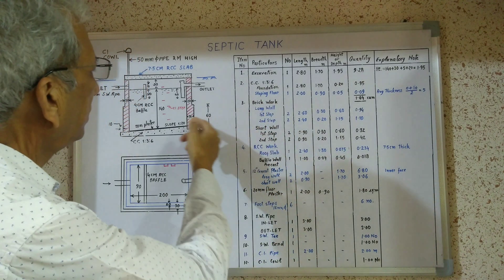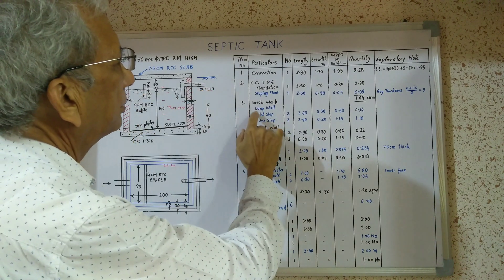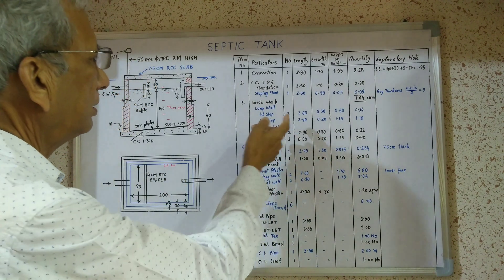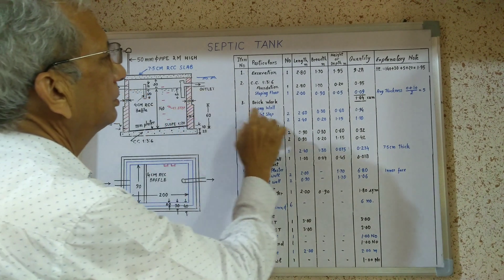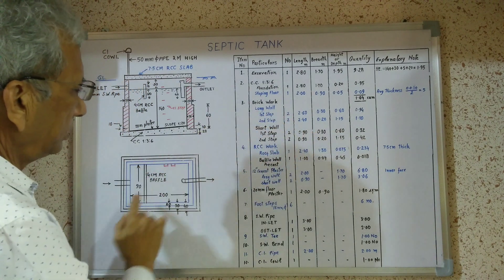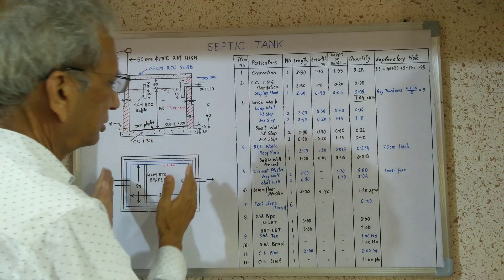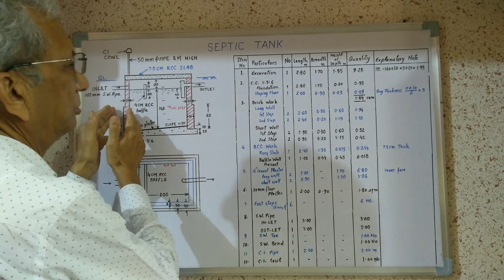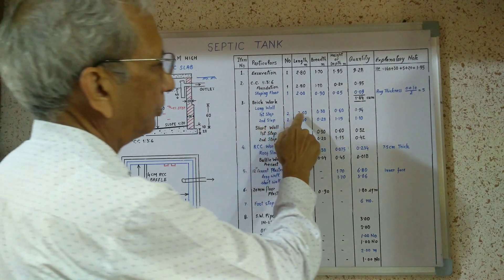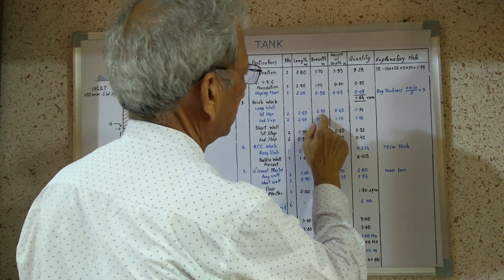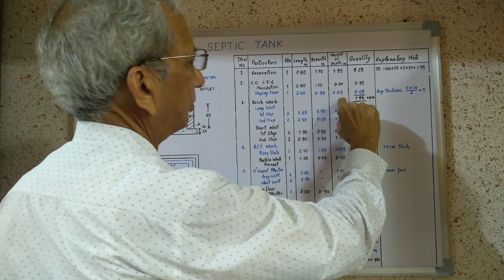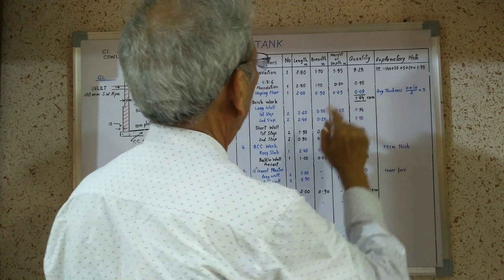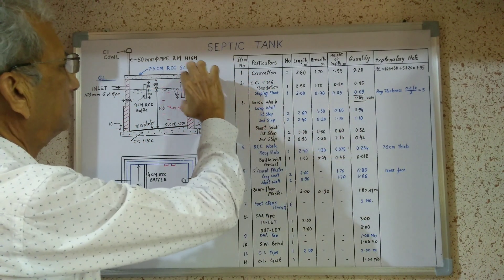Next item is brick work. We will apply the long wall short wall method. First step of brick work — two number long walls. Length: internal length 2 meters plus 30 cm on each side including corners, giving 2.60 meters. Thickness of wall is 30 centimeters and depth of wall is 60 centimeters. Result is 0.94 cubic meters.